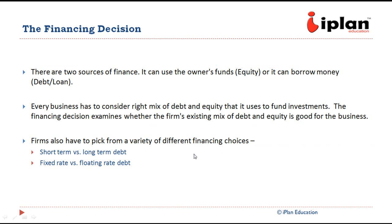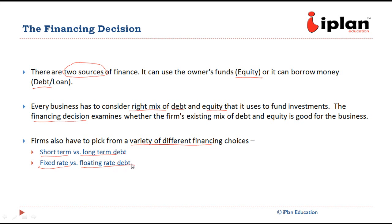The second important decision in corporate finance is the financing decision. There are two major sources: debt and equity. Any project could be funded by either of these two or a mixture of them. We need to determine what is the right mix of debt and equity so that our financial decision is sound. Even within debt, there could be two types of financing — short term and long term. From another angle, there are two kinds of debt: fixed rate and floating rate of interest. We need to make a decision whether fixed or floating is more suitable for our project.